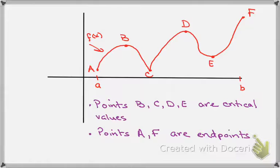So again just to reiterate, points B, C, D, and E are the critical values or critical points if we take the x and the y. And points A and F are the endpoints of the function.